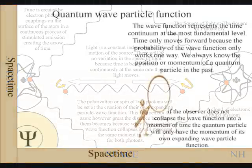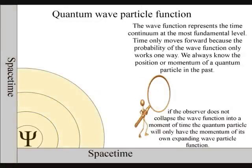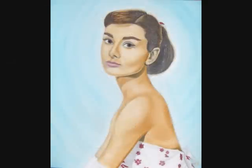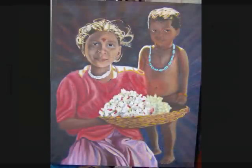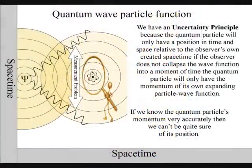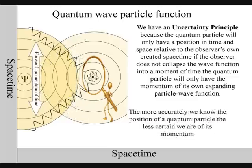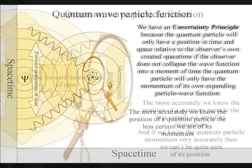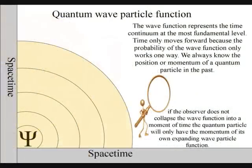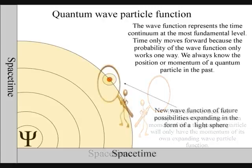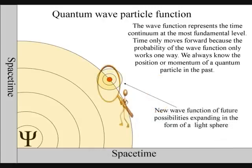If the observer does not collapse the wave function, the quantum particle will only have the momentum of its own particle wave function. At a fundamental quantum level, the observer is the observed within his or her own created space-time. Therefore, the more accurately we know the position of a quantum particle, the less certain we are of its momentum, and if we know its momentum very accurately, then we can't be quite sure where it is. This is because to observe the quantum particle, we create a photon-electron coupling, collapsing the particle wave function into a moment of time and space that is part of the observer's own created space-time.